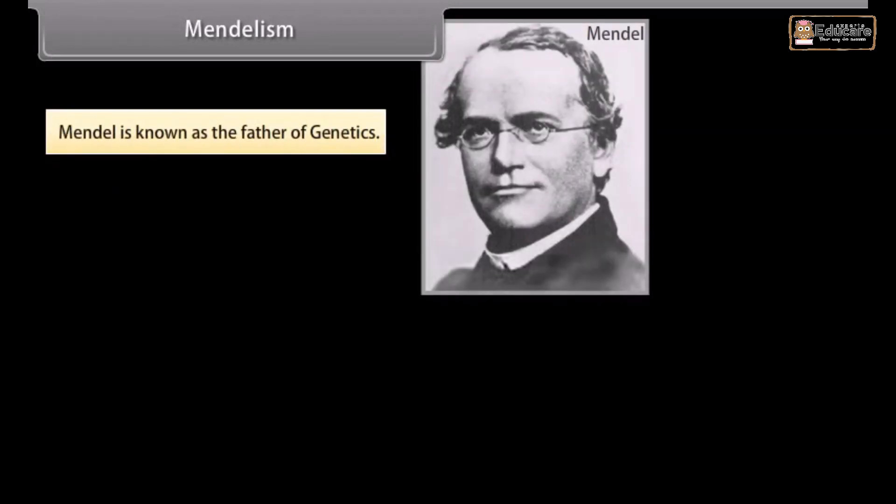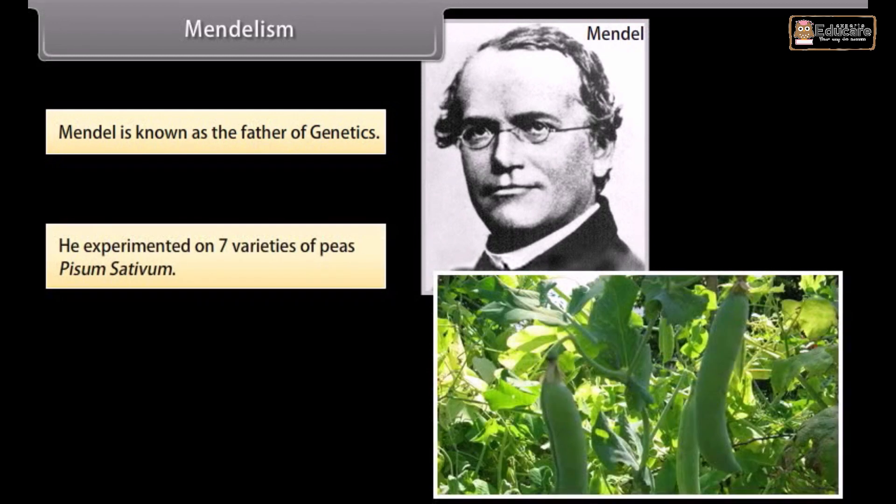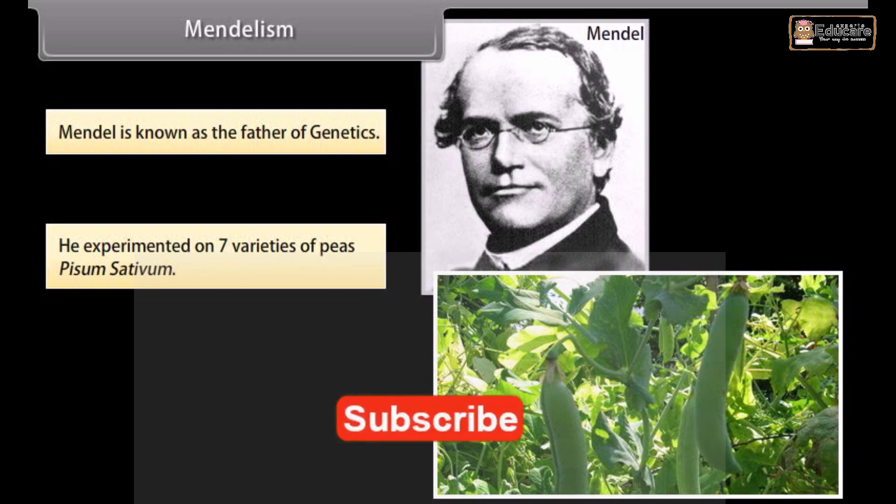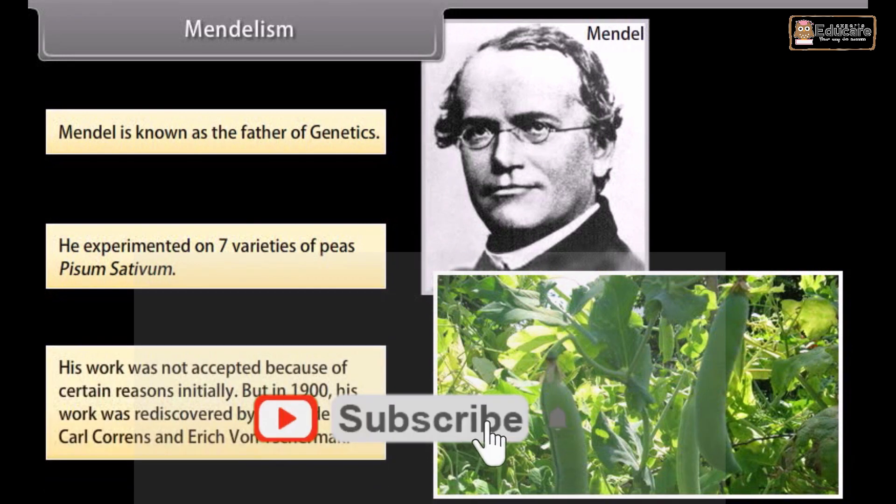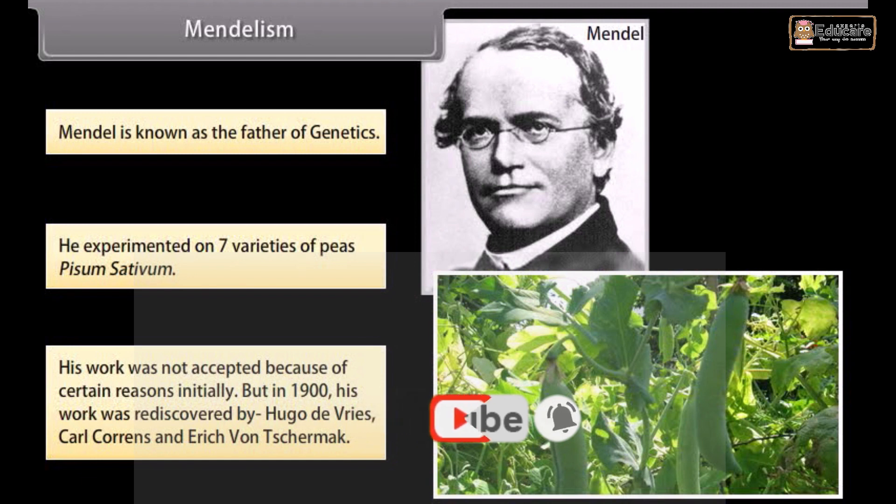Mendelism. Mendel is known as the father of genetics. He experimented on seven varieties of peas, Pisum sativum. His work was not accepted initially, but in 1900 his work was rediscovered by Hugo de Vries, Carl Correns, and Erich von Tschermak.